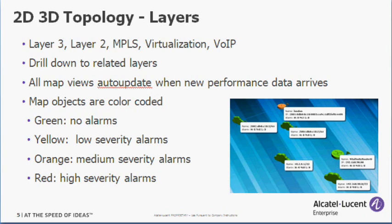Map types also include virtualization and voice over IP. There's also drill-down capability between the related layers. All of the map views will auto-update when new performance data arrives, and the map objects are color-coded according to the current alarm severity — green meaning no alarms, up to red meaning there are high-severity alarms against that device.